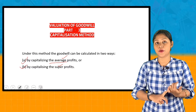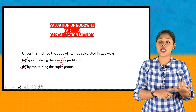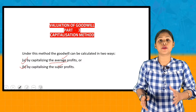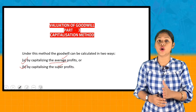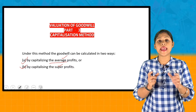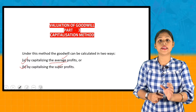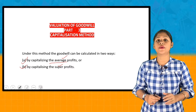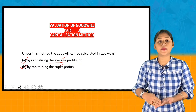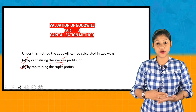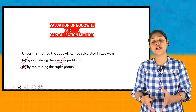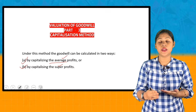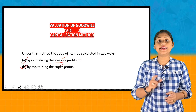There are two types: average profit and super profit. The capitalization of capital is the most important thing. The normal rate of return is used to multiply the capital employed to calculate the normal profit. For example, a 10% normal rate of return means dividing by 10% to get the capitalized value — which is the reciprocal, i.e., 100 divided by 10.